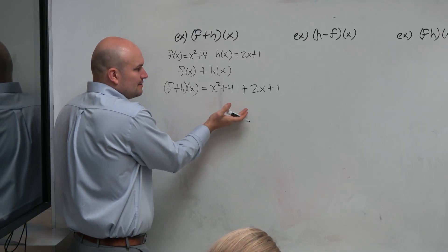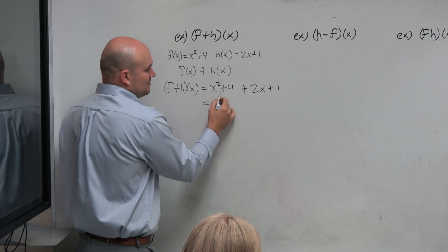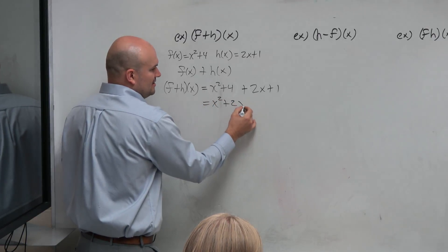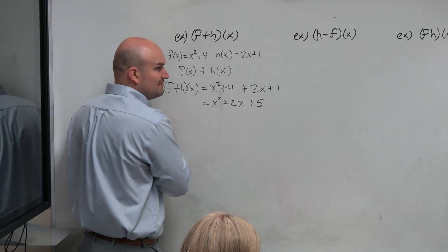And then basically, we're just adding here. Now, we can only add like terms. So I can't add the x squared with anything. I can't add the 2x with anything. But the 4 and the 1 are both numbers, so I can add them together, and that gives me 5.